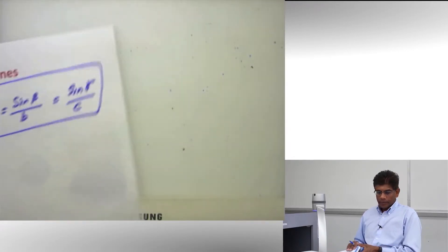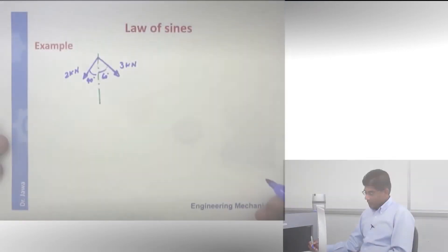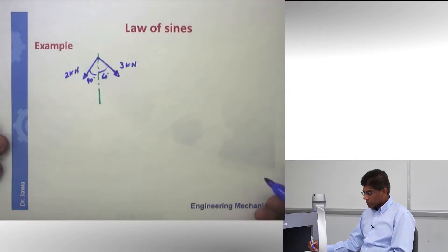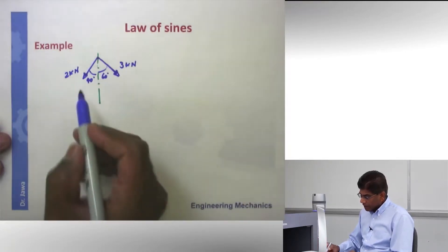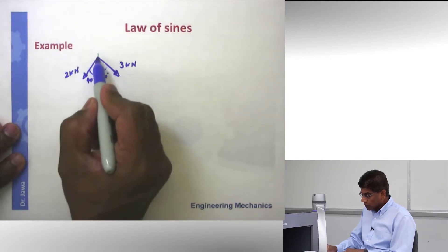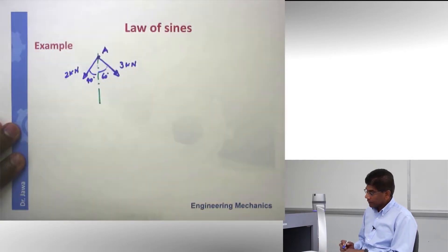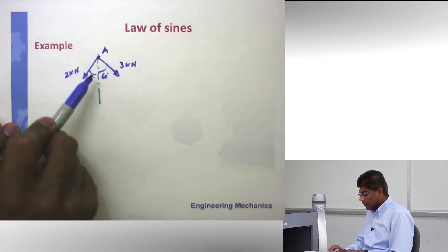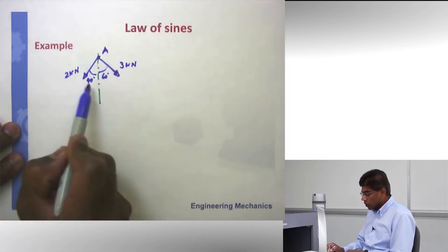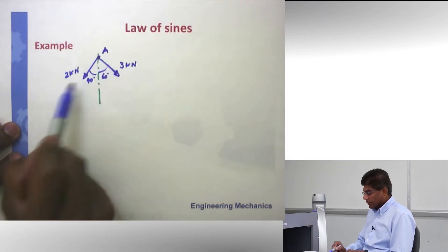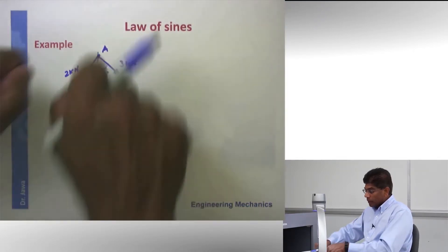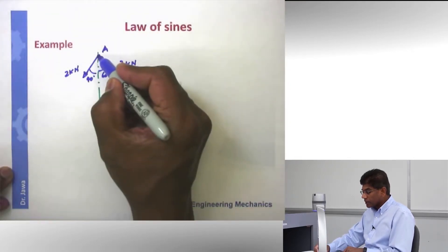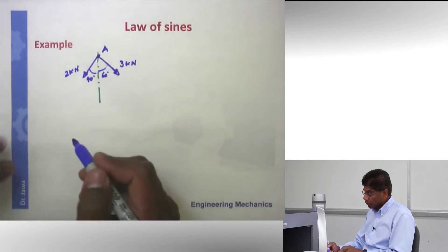Here's an example where we want to use an analytical approach in solving a vector problem. In this particular case, take a closer look at this problem. There are two forces applied at this point. Let's say we call this point A. Two forces. There's a 3 kilonewton force. That would be 3000 Newton force applied about 60 degrees from the vertical line. And there is another force, 2 kilonewtons, applied at 40 degrees from the vertical line in the other direction. We want to add this. In other words, two people are pulling this rope and how is the resultant going to be? The net effect of these two forces.